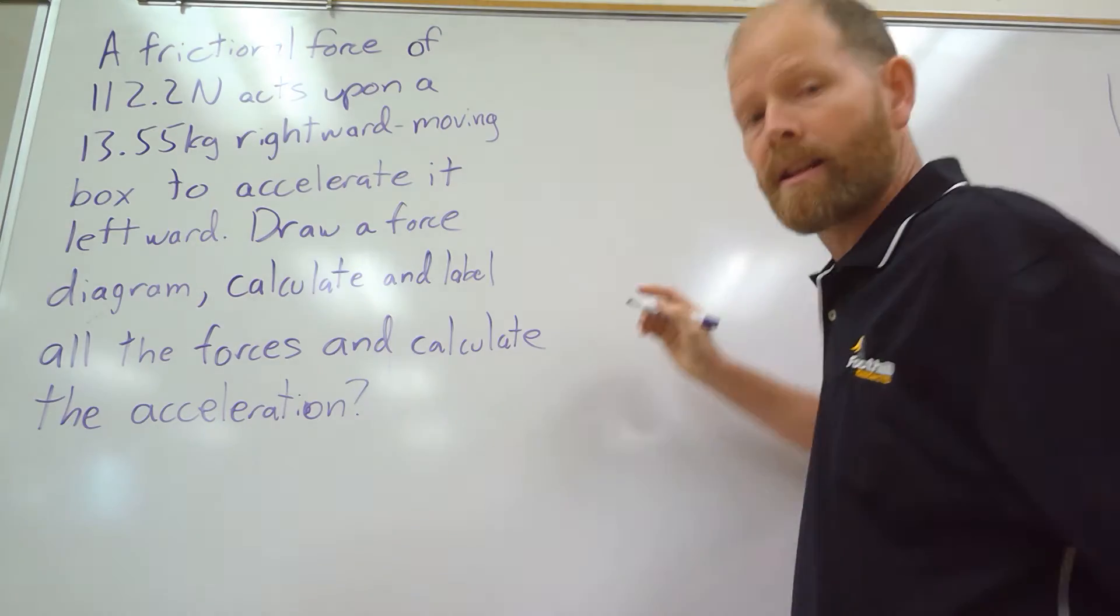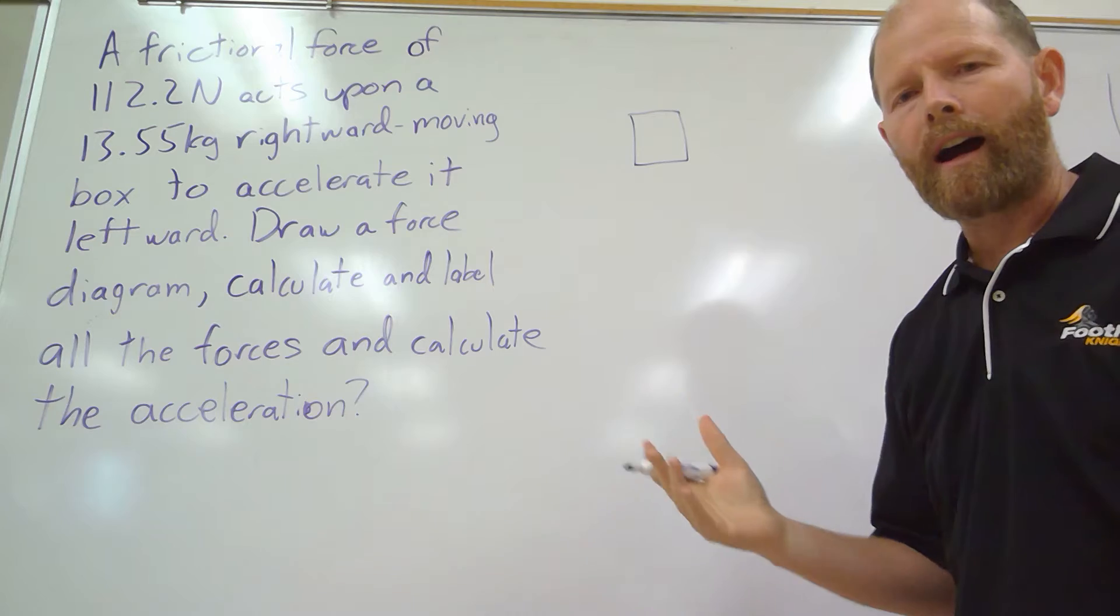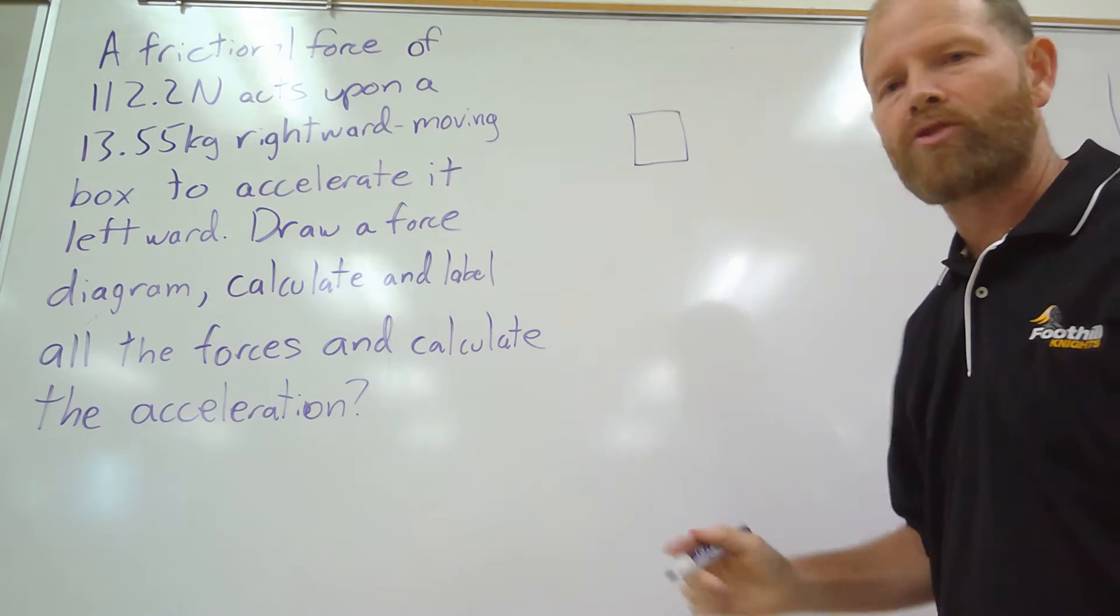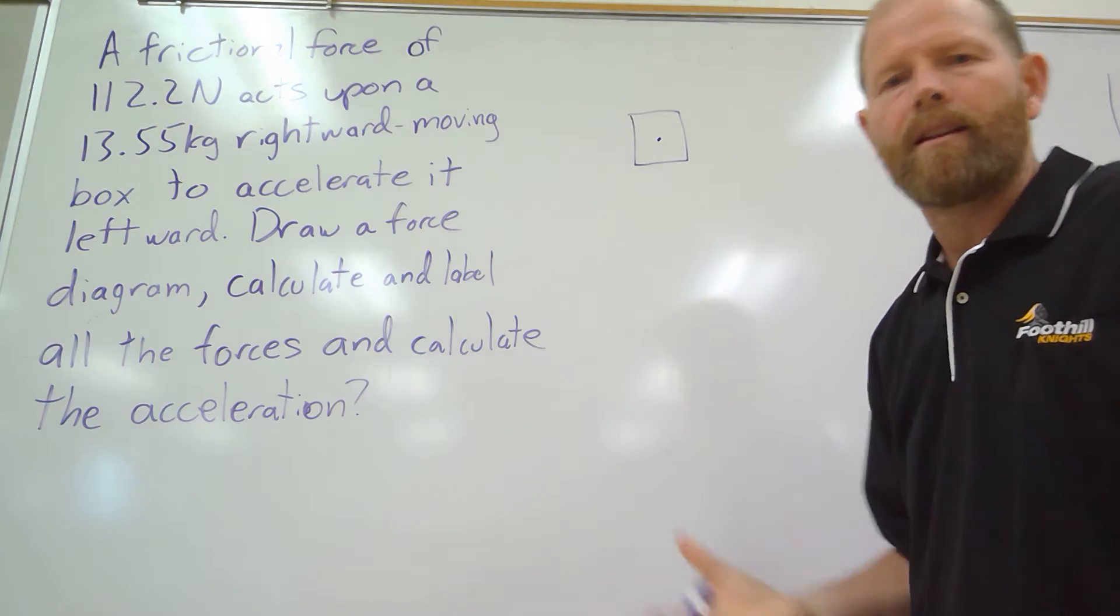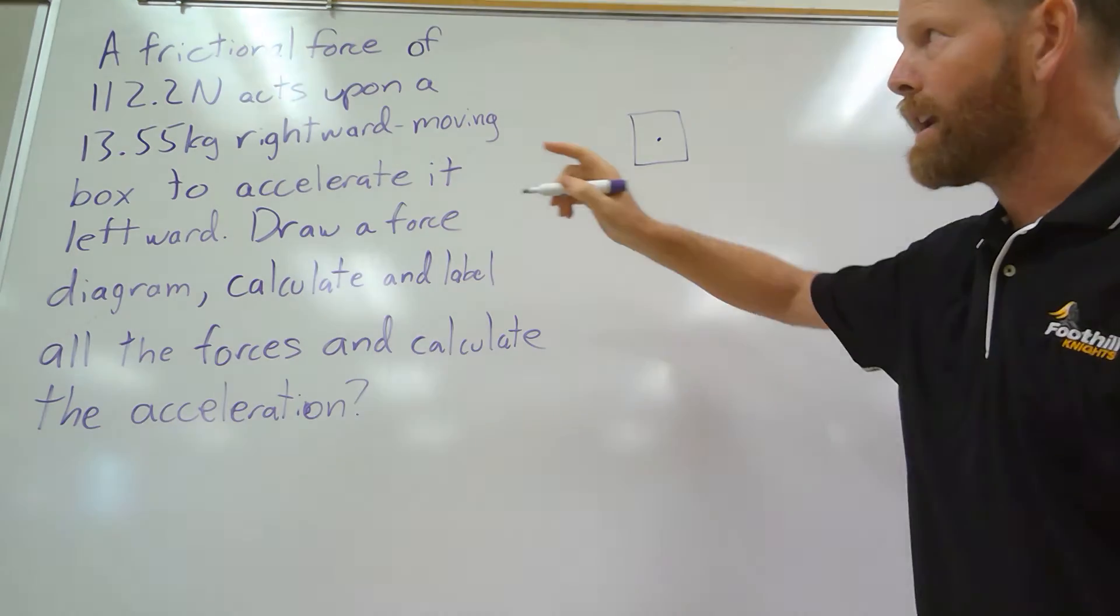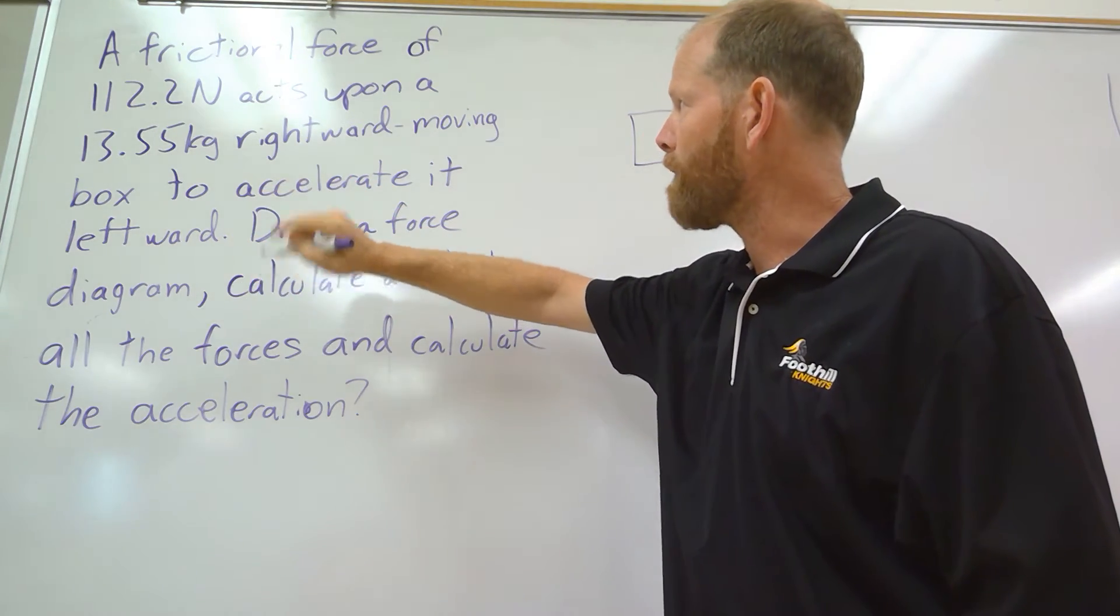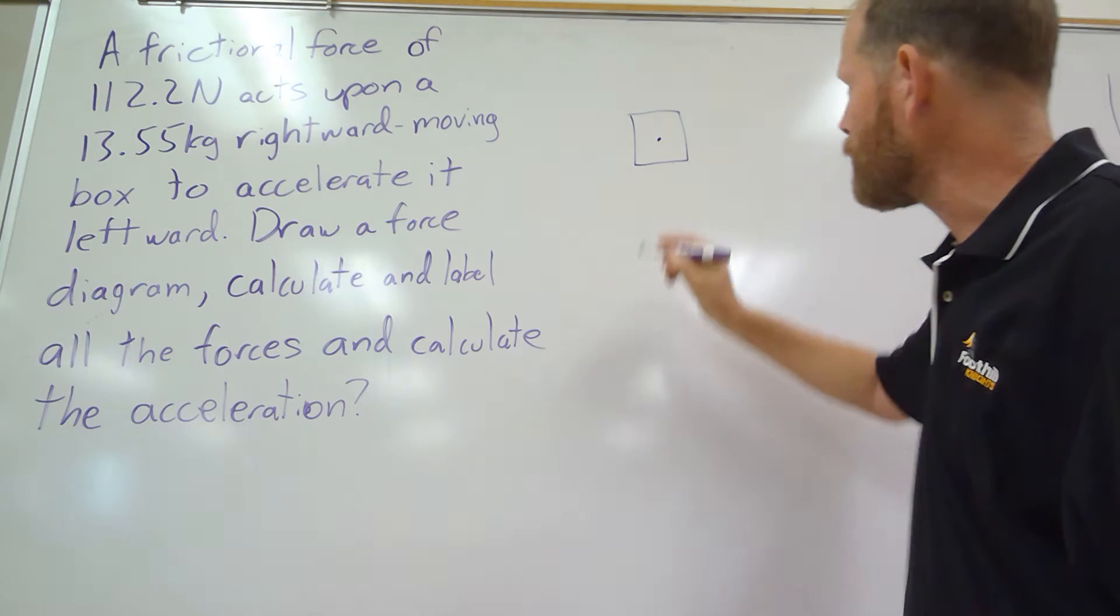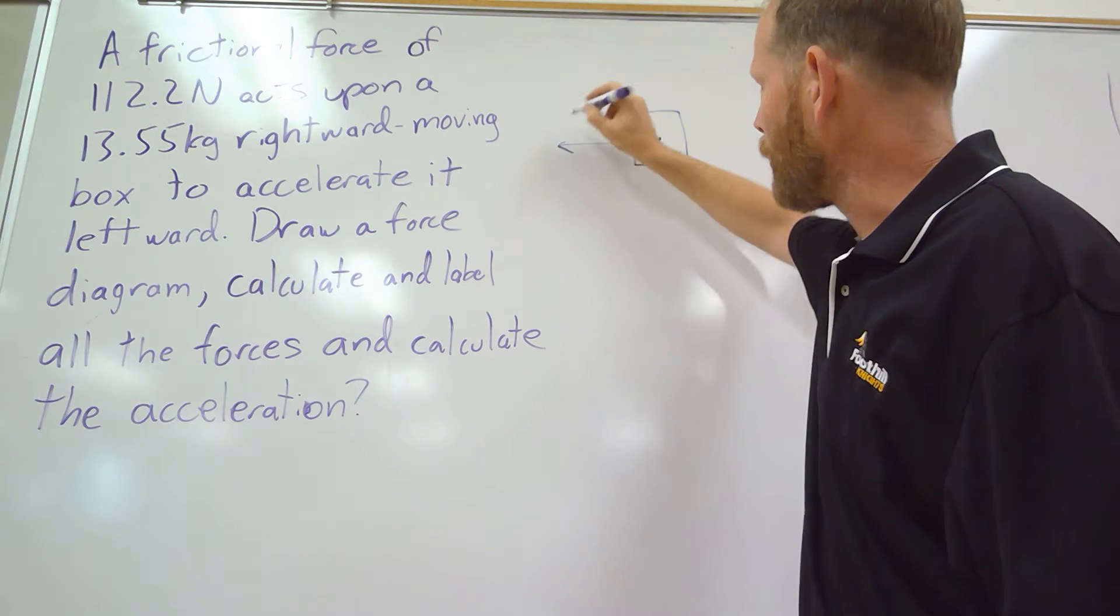First thing, let's think about all the forces that are on this box. First of all, our object—whatever it is—we almost always draw it as a box. We put a dot in the center to recognize that the whole object is being pushed by these forces. We see in the directions that it says there is a force that's going to accelerate it leftward. That means there must be a force causing that, and we're told that that force is the force of friction.